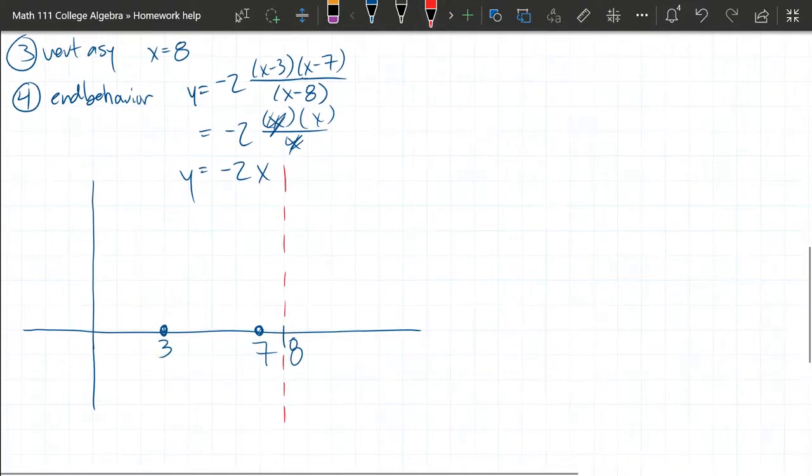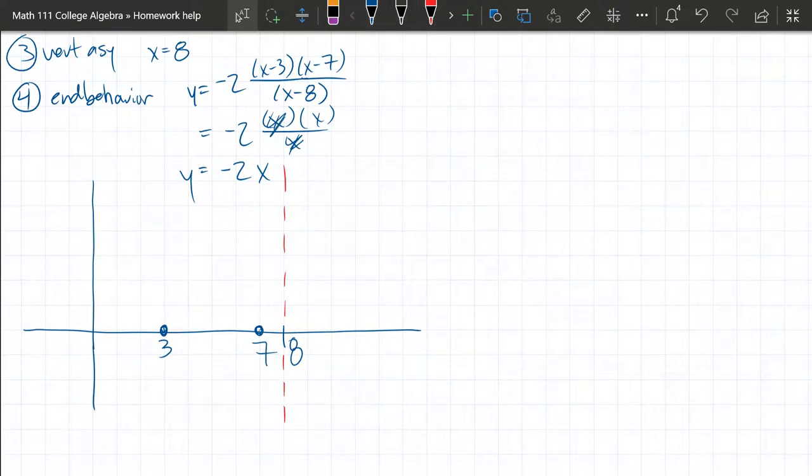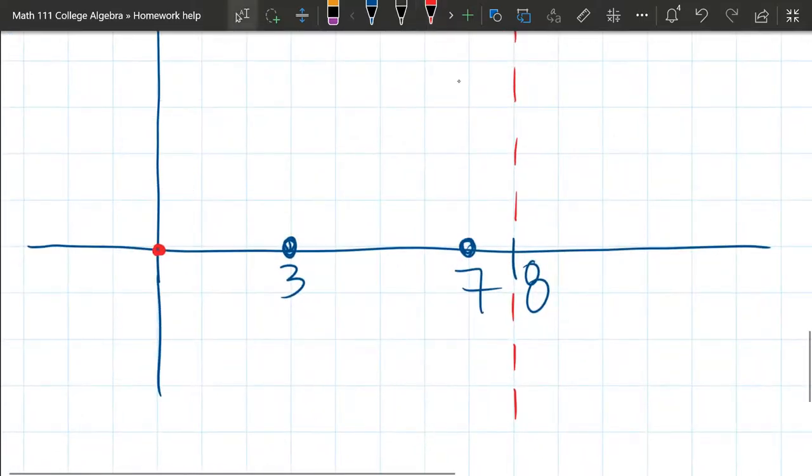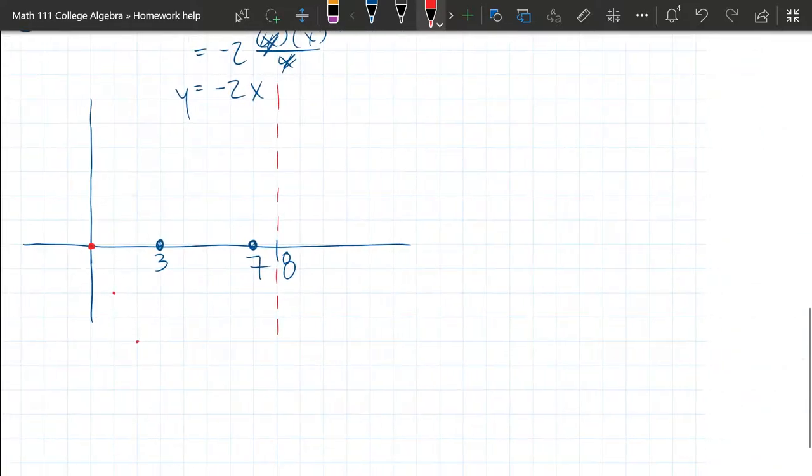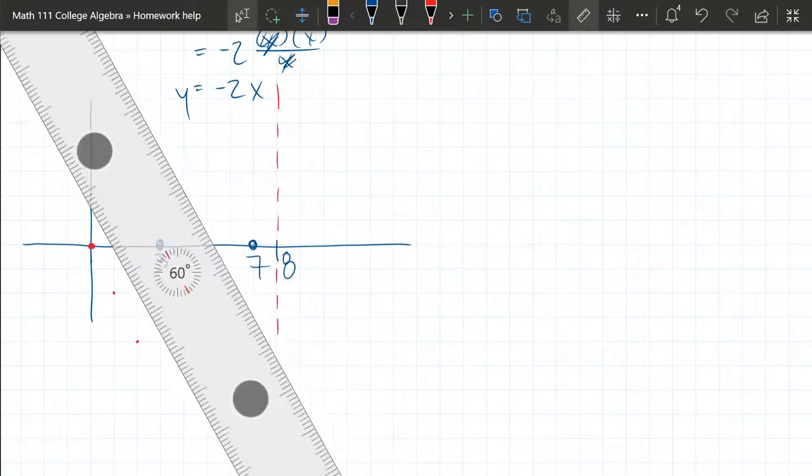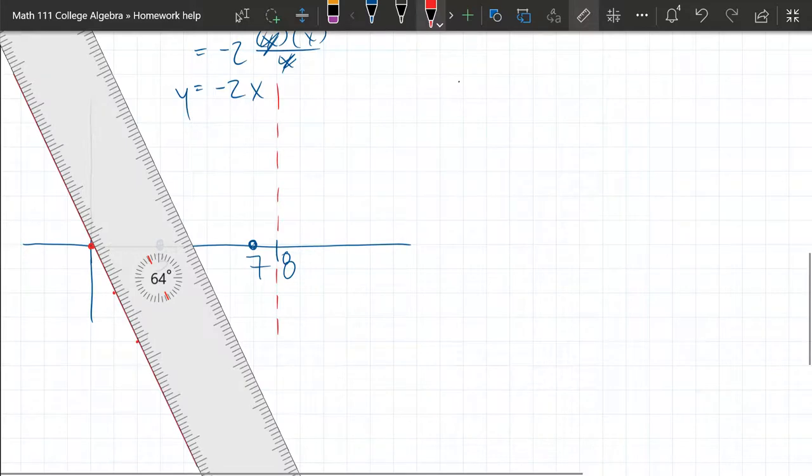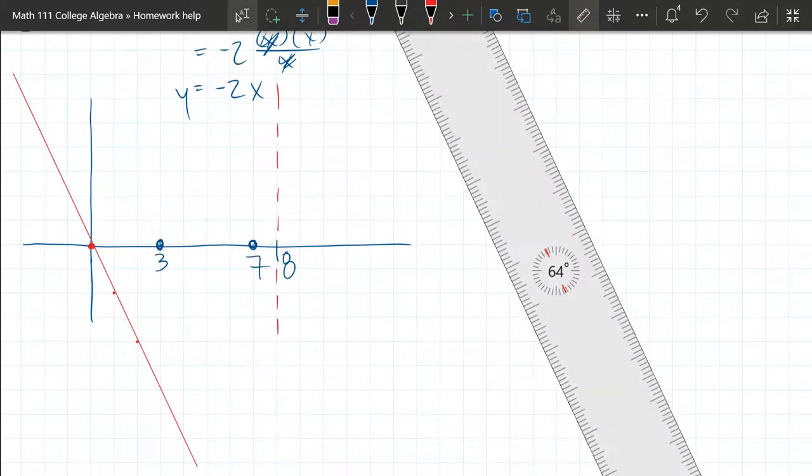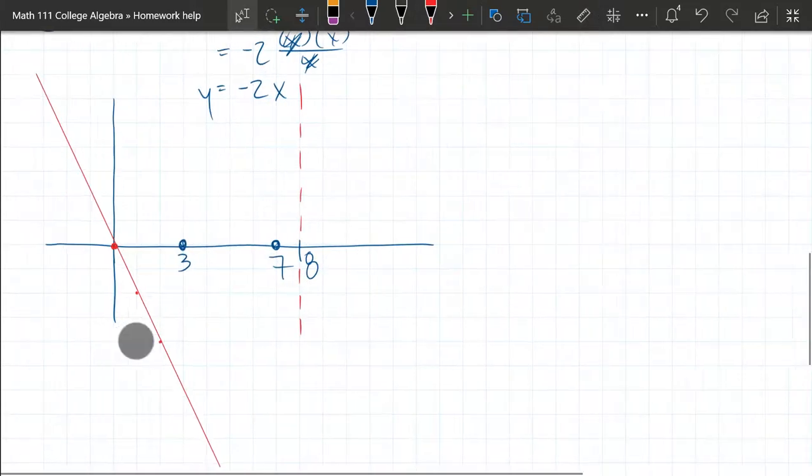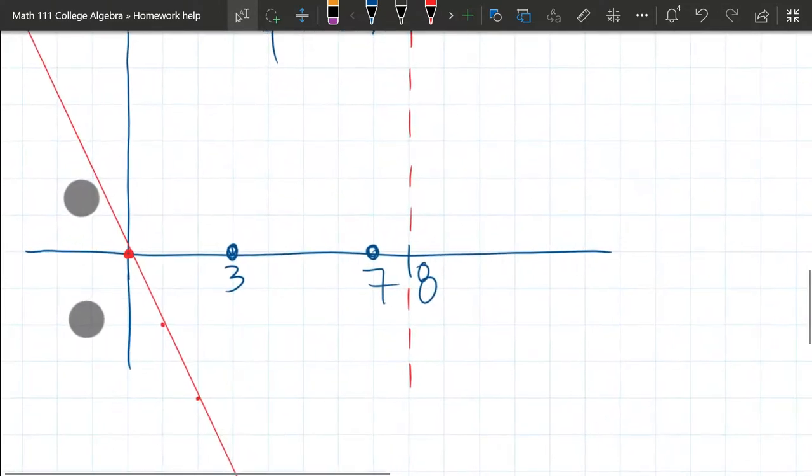And the last thing we're graphing is end behavior. We'll graph it with red also. So negative two x, it's going through the origin because the y-intercept zero. Negative two means down two over one. Down two over one. And so this, there's our line right there. All right. So that would be my answer right there.